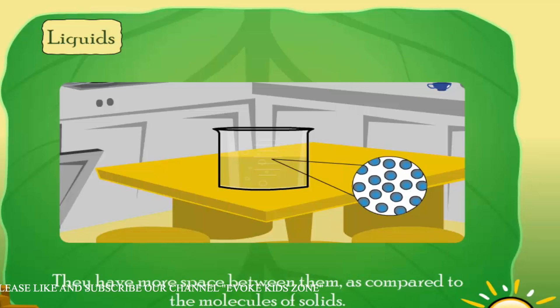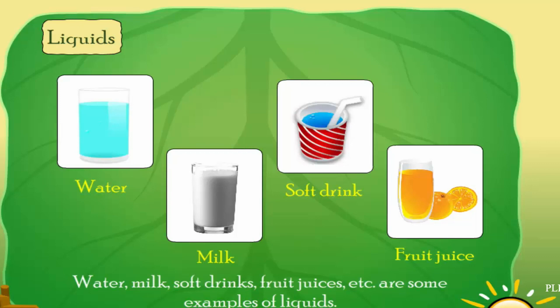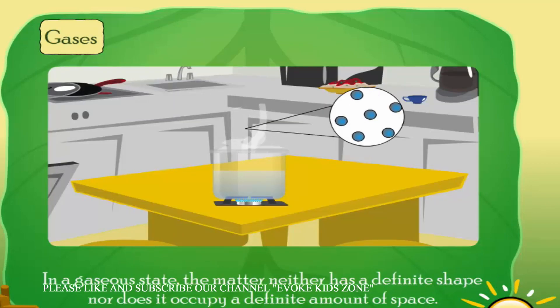Compared to the molecules of solids, these molecules are able to slide past each other. Water, milk, soft drinks, and fruit juices are some examples of liquids. In a gaseous state, the matter neither has a definite shape